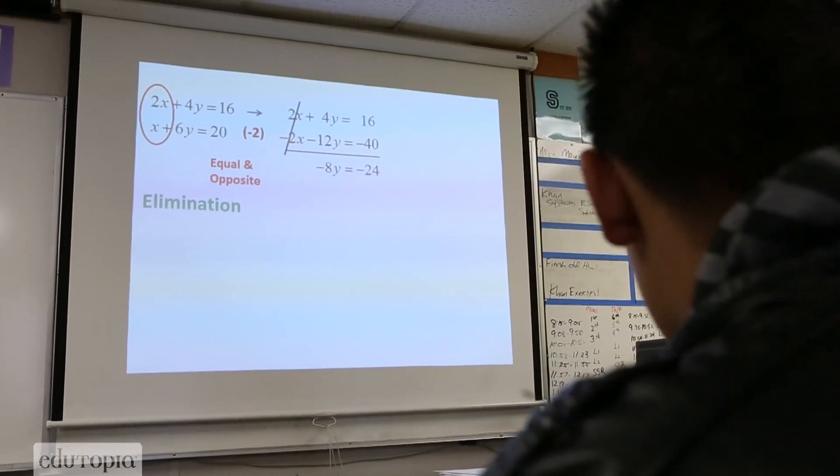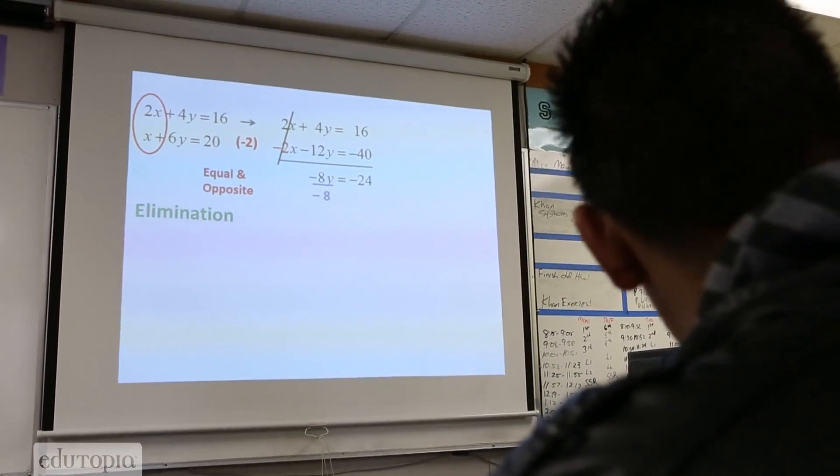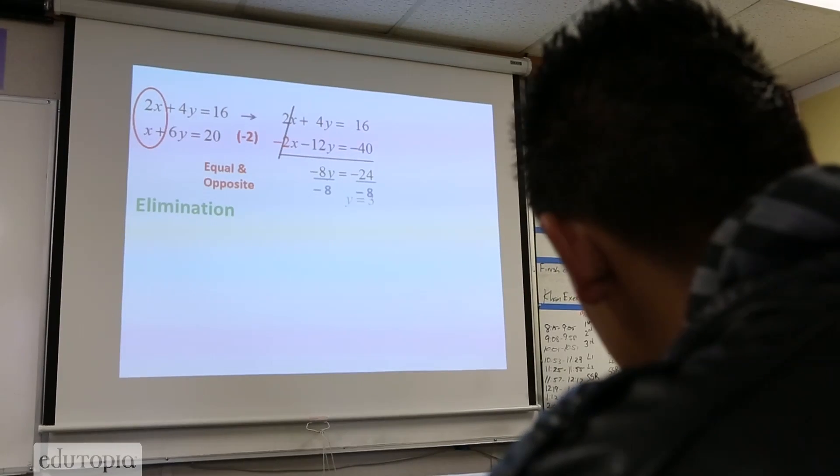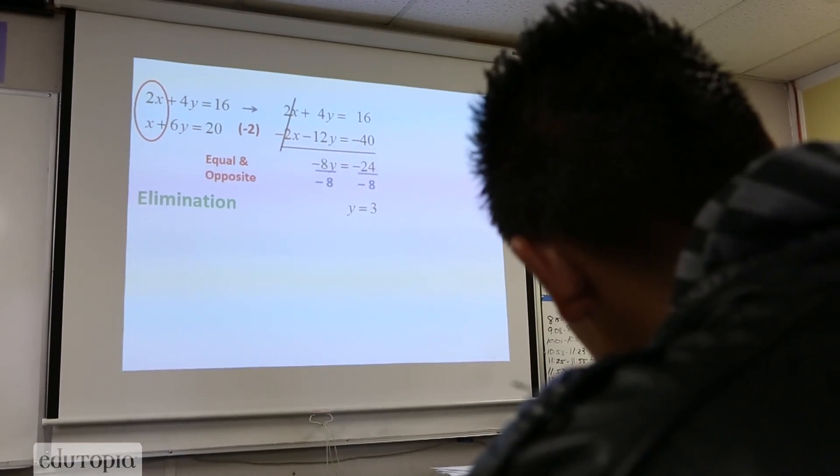These are primarily sophomores. They've taken algebra before and did not pass. We started out with some relatively easy problems — systems of elimination, so it's 0.5. There was a model on the board for them to sort of follow, talk to each other if they need a little bit of help, ask me if they need a little bit of help.